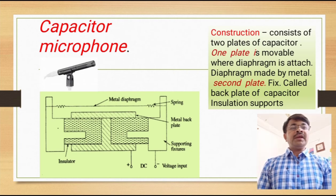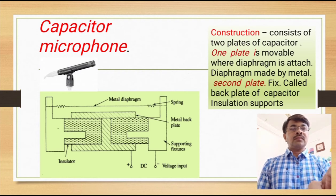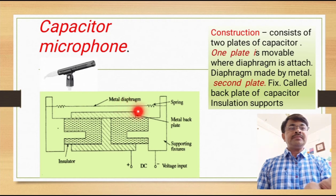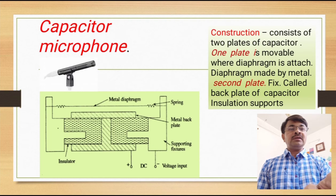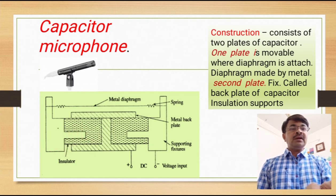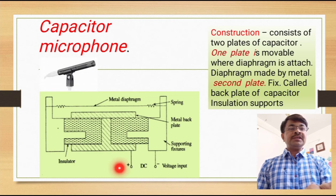For the working, we require a DC biasing supply. This is one plate of the capacitor. This is the diaphragm. This is the other plate of the capacitor. In between the two plates of the capacitor, there is insulating material. And this is the biasing supply.